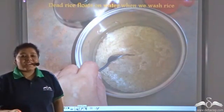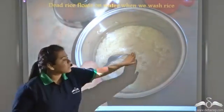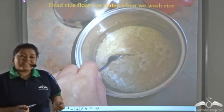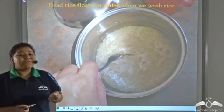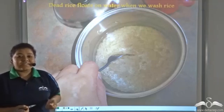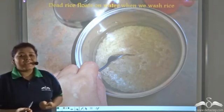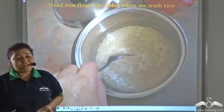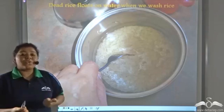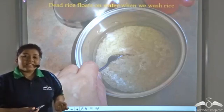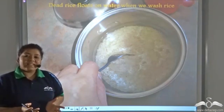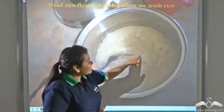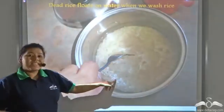Now while washing rice, dead rice floats to the top. Why is this so? Rice grains contain an embryo that needs nourishment. When the food supply is over, the embryo does not get enough food and dies. Since the food stores are depleted inside the grain, there is a vacuum inside, which causes the rice grain to float on water. So the rice floating on water is dead rice — it has a dead embryo and all food reserves are gone.